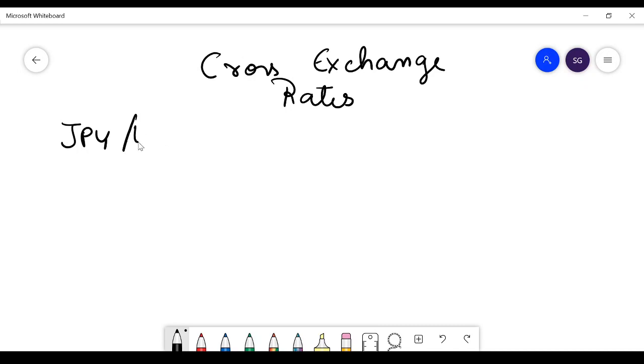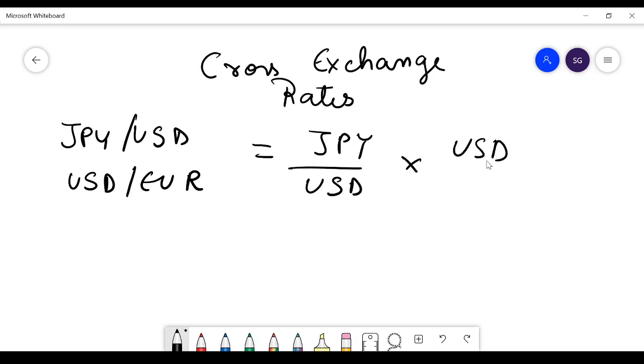You will find that when you arrange it in this form, the numerator and the denominator get cancelled out, so you get Japanese yen by euro. This is a simple way to calculate the cross exchange rates. You are generally given a question in exam like this.